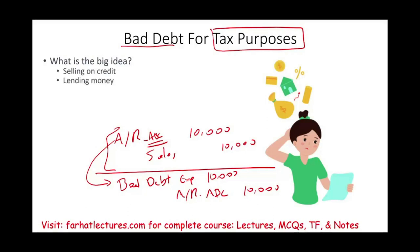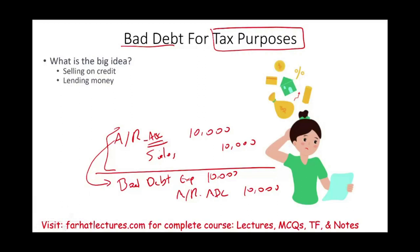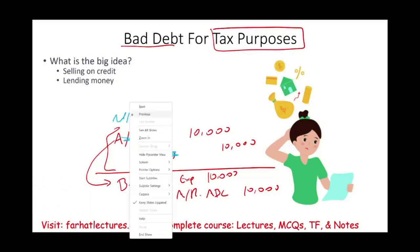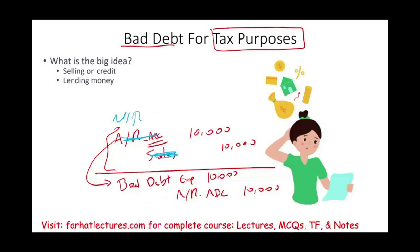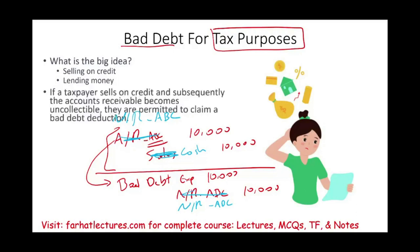The same concept applies to loans. If you made a loan, instead of accounts receivable you would debit notes receivable. If you lend money to ABC and credit cash, you expect to get your money back plus interest. If you don't, you debit bad debt expense and credit notes receivable for ABC company. Now let's look into the details further.